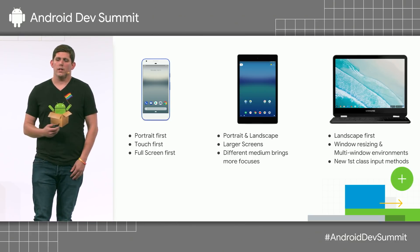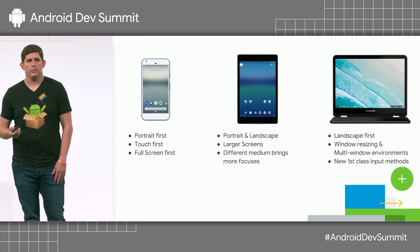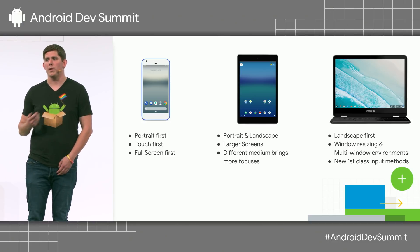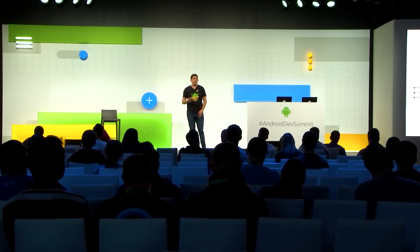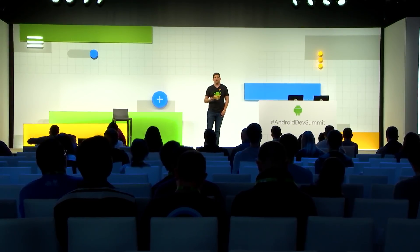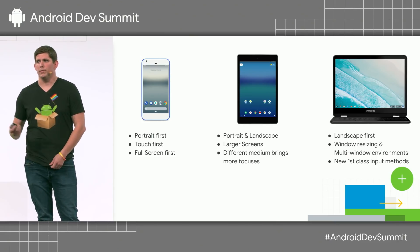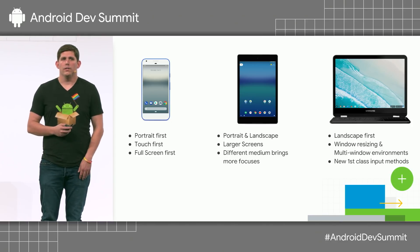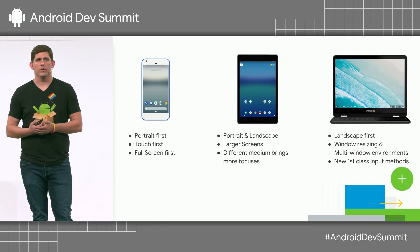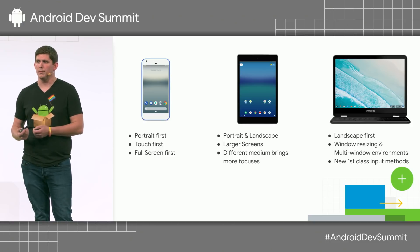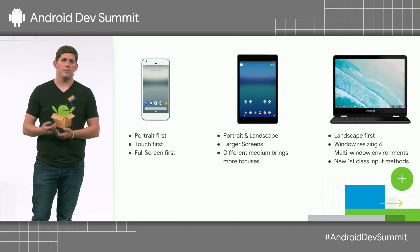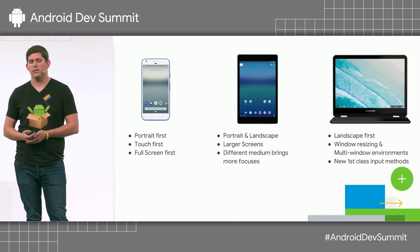Moving on to desktop platforms: we have Chrome OS, some OEMs that have made desktop platforms like Samsung Dex and Huawei Mate desktop mode. Android has now brought the ability to really take advantage of having external displays, so it's very possible that your app, even running on a phone, is being displayed to an external monitor. This is where the biggest difference comes in — it's landscape first, with window resizing, multi-window, and new first-class input methods like keyboard, mouse, and trackpads.